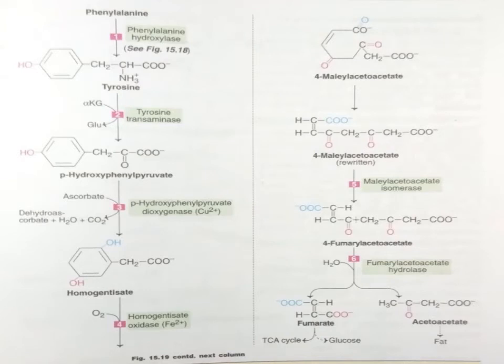In the first step, phenylalanine is converted to tyrosine by a hydroxylation reaction, by the enzyme phenylalanine hydroxylase — a hydroxy group is attached to the phenylalanine ring. In the second step, tyrosine is converted to parahydroxyphenylpyruvate: the amino group on the alanine portion is converted into a double-bond O, producing parahydroxyphenylpyruvate by the enzyme tyrosine transaminase.